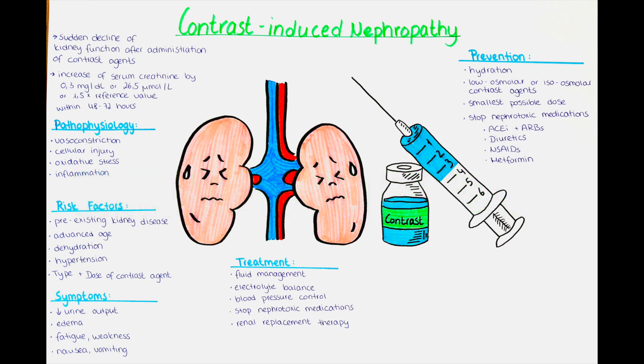Contrast induced nephropathy, also known as contrast induced acute kidney injury, is a condition characterized by a sudden decline in kidney function following the administration of contrast agents. It is defined as an increase of serum creatinine by at least 0.3 milligram per deciliter or 26.5 micromole per liter, or to at least a 1.5 fold of the reference value, within 48 to 72 hours after administration of intravascular contrast agents.